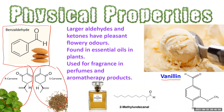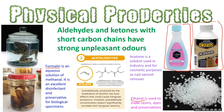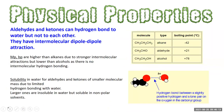Aldehydes and ketones with flowery fragrances are widely used in perfumes — we'll learn more about the Coco Chanel story later with Chanel No. 5. Physical properties like melting point, boiling point, and solubility arise from intermolecular forces. Aldehydes and ketones can form hydrogen bonds with water but not with each other, so they have higher melting and boiling points than alkanes but lower than alcohols due to the absence of hydrogen bonding between their own molecules.